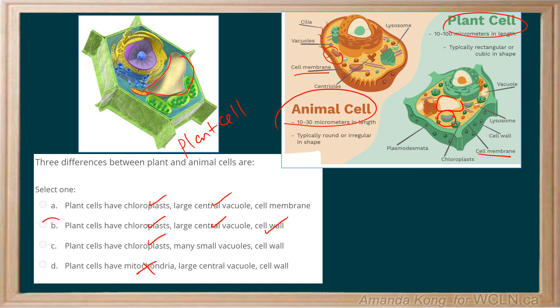So the three key differences between plant and animal cells are B. Plant cells have chloroplasts, a large central vacuole, and a presence of a cell wall. Let's go ahead and see the next one. Thank you.